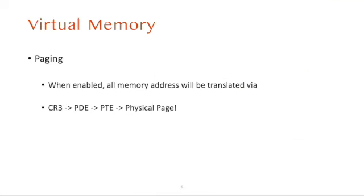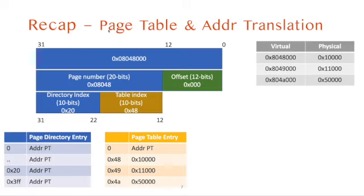Next is about virtual memory. Intel processors use paging for implementing virtual memory, and if paging is enabled, all memory addresses will be treated as virtual addresses. They go through a translation layer starting from the CR3 register to find the page directory, then access the page directory entry to find the page table, and then access the page table entry to find the physical page address. We split the virtual address into two parts: the page number (top 20 bits) and the offset. The page number is further split into a page directory index (top 10 bits) and a page table index (lower 10 bits).